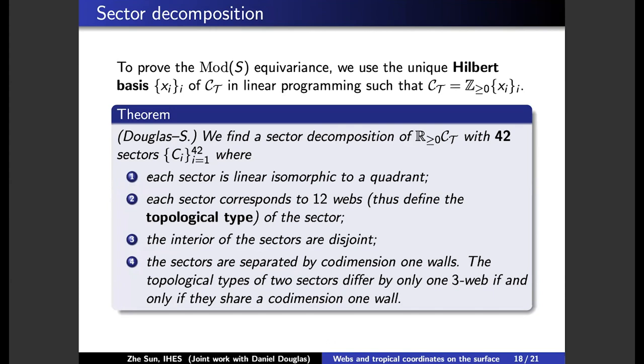so that each sector is linearly isomorphic to a quadrant. Each sector corresponds to 12 webs, thus we define the topological type of each sector by these 12 webs. And actually, the interior of the sectors are disjoint.